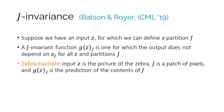We can define this concept more formally in the framework laid out by Batson and Royer, who coined the term J-invariants. Suppose that we have some input z for which we can define a partition J. A J-invariant function, let's say g, is one for which the output does not depend on the input z that sits within the patch J. To bring this back to the zebra example, the input is the original picture of the zebra, J is a blank patch of pixels, and the function g is the prediction of what is underneath the patch without actually looking.